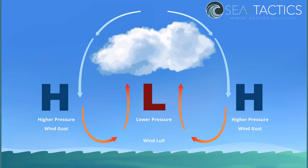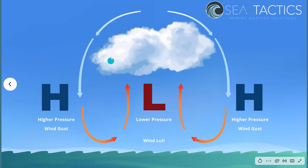Remember, high pressure and low pressure is relative here — we're not talking about like a low pressure storm. It just means there's relatively lower pressure and less wind underneath the cloud, and the most wind you find at the high pressure area on the edge of the cloud, where we get the wind gust.